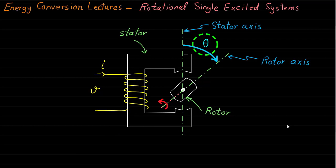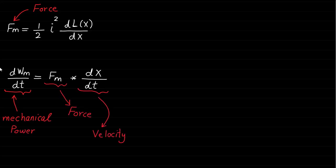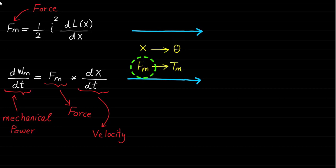The angle theta represents the angle between the rotor and stator magnetic field axes. Since we already developed the force and mechanical power of the linear motion system, the torque expression and mechanical power of the rotational movement single excited system can be developed by analogy, replacing the linear displacement x by the angular rotation angle theta, and replacing the linear motion force fm by the rotational torque tm.